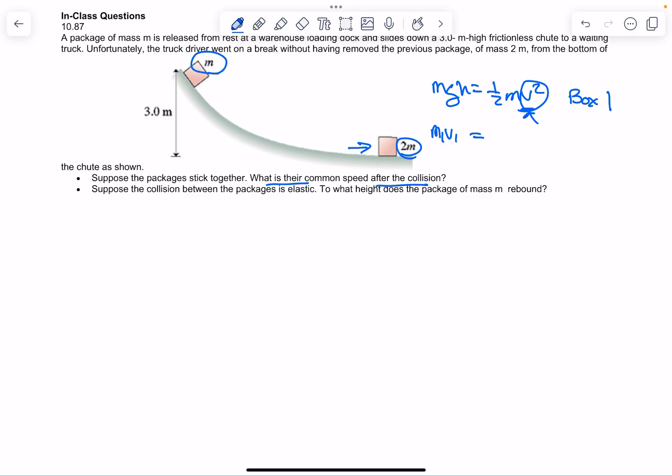you're going to have 3m, and I assume they weigh 1 kilogram, times v final. So you know what v1 is, after you do this, and then you can find the final velocity, the common speed, as they say, after the collision.